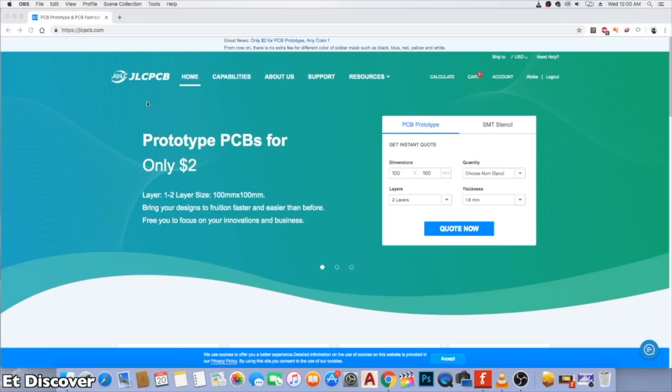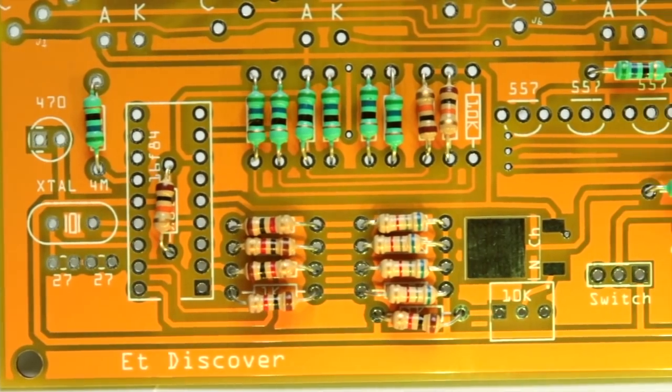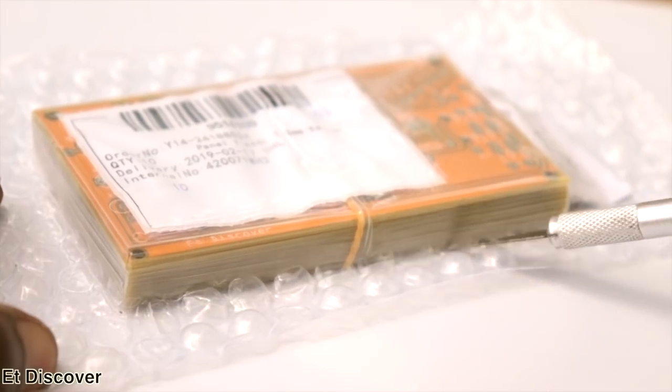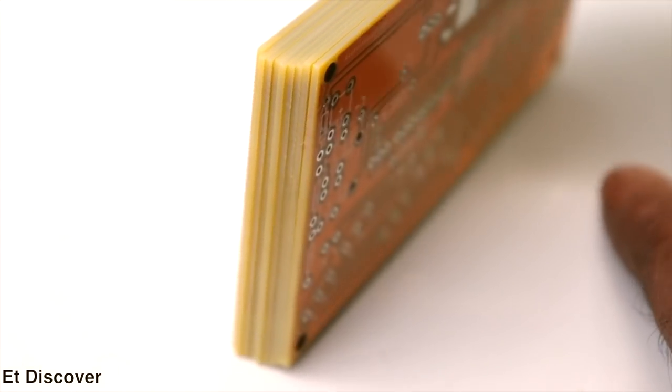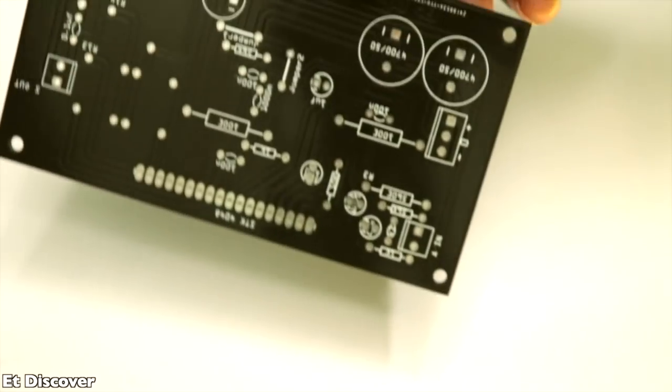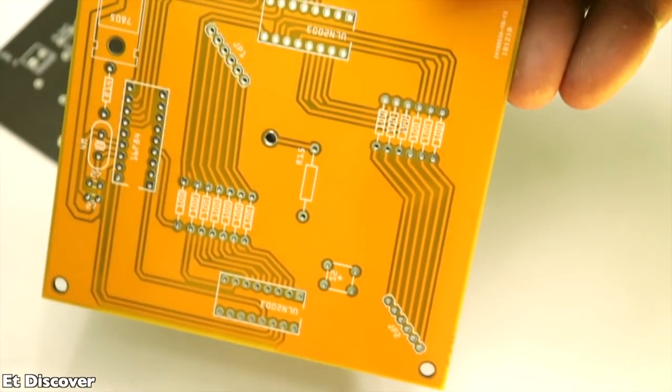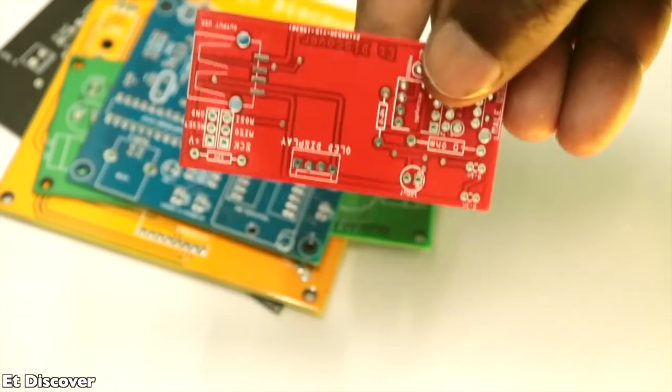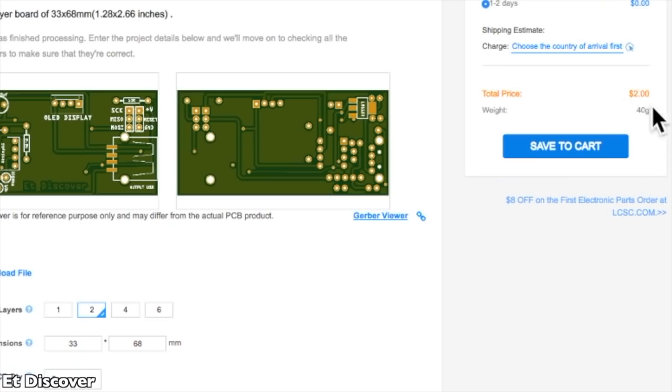This video is sponsored by JLCPCB. If you want to make some professional PCB for yourself and business purpose, then you can order it from JLCPCB. They make really awesome prototype PCB. And you can choose any type of color for your PCB. They don't take any extra charge for color. You only have to pay $2 for 10 PCBs.